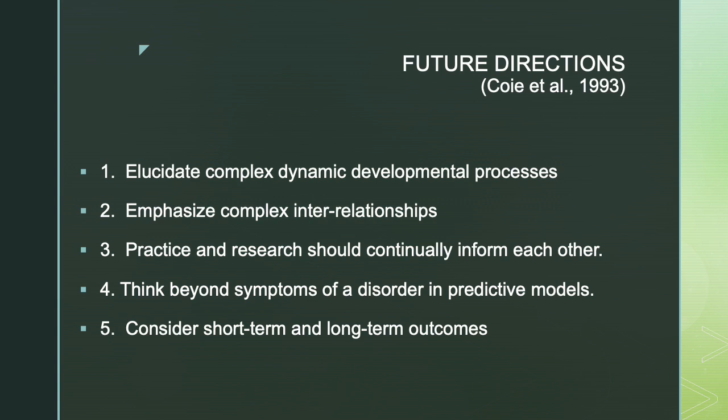Third, science should continually inform practice and vice versa. If you have a prevention trial founded in strong developmental theory, what you learn from its outcome could give you information about the underlying etiology of the disorder you're studying. Practice and research should be designed to continually inform each other. In this way, researchers need to be able to communicate effectively with lay people who will be part of the intervention, and also to put science out in a way that is readily understood by policymakers.